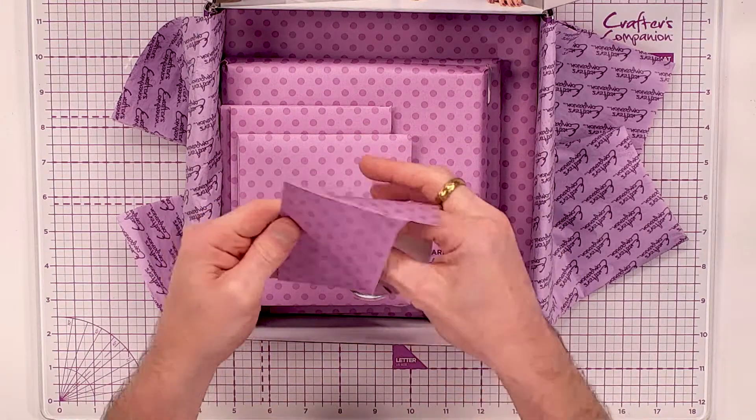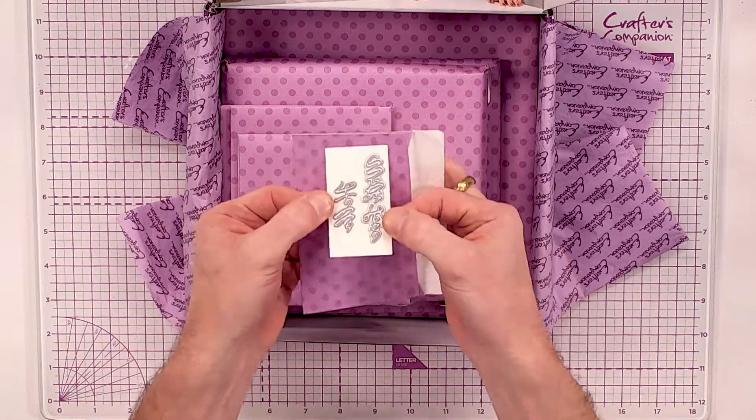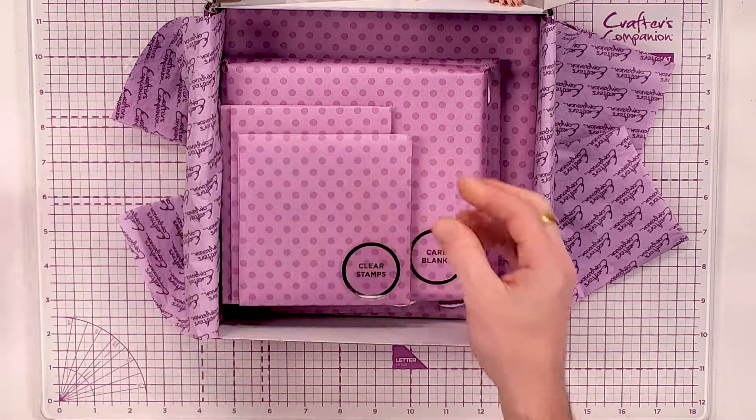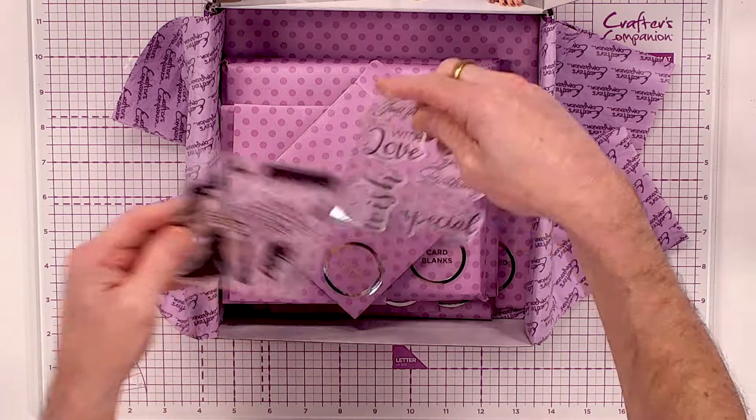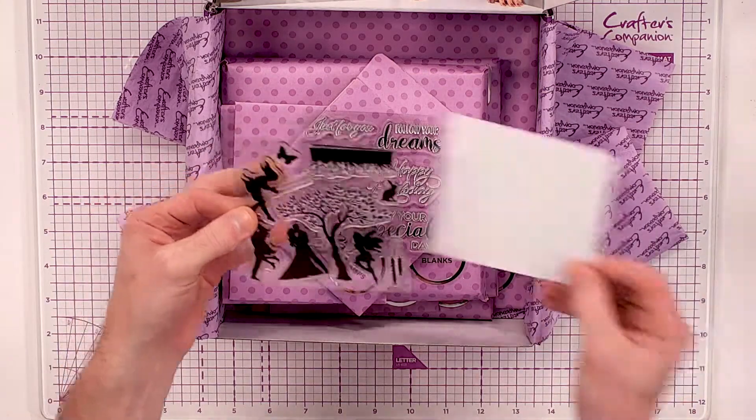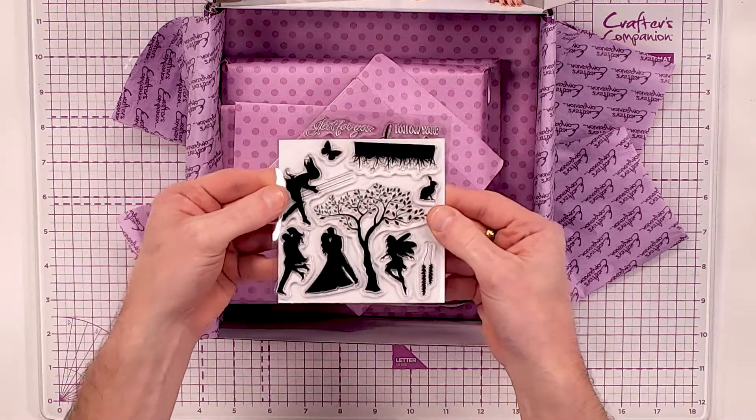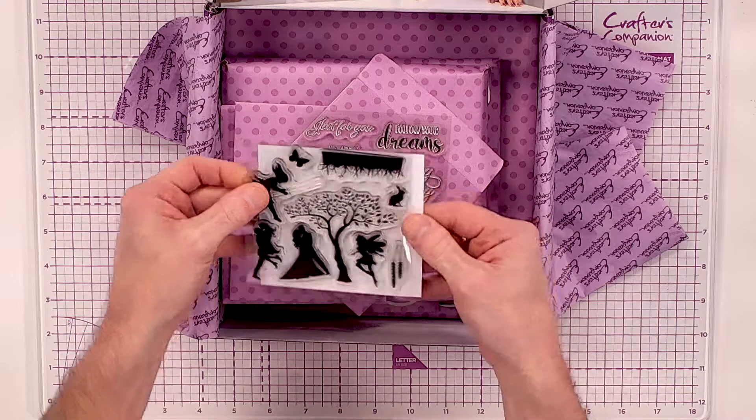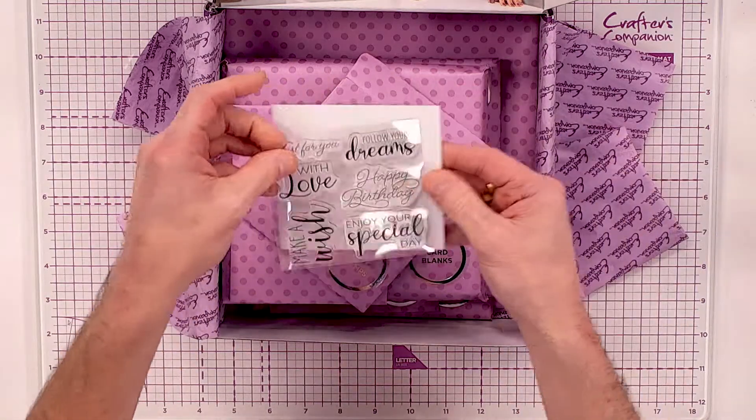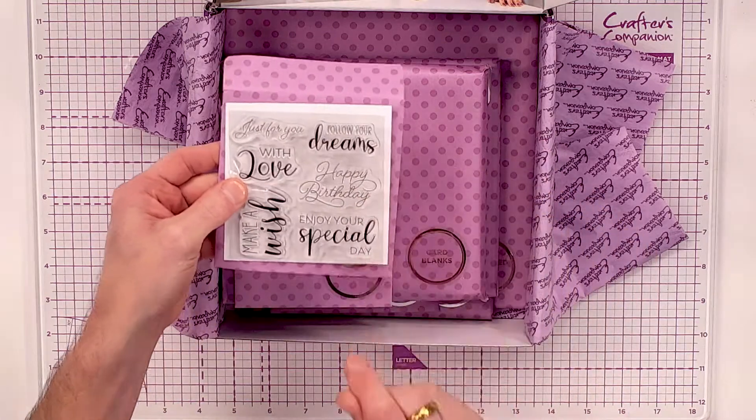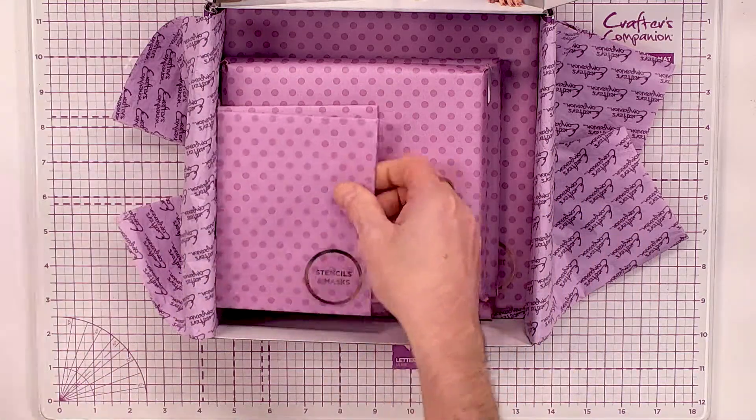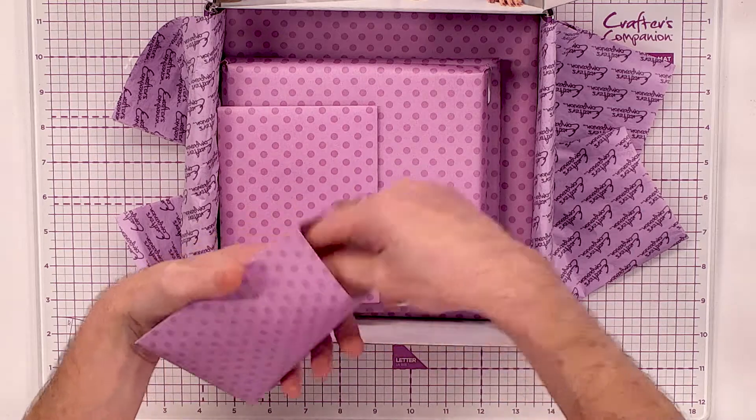Now when it comes to this box, this isn't really dedicated to dies, so what you are going to get is a couple of sentiment dies. But when it comes to this collection in the box, what you're going to get is these stamps. You're going to get a couple of sheets, so one of them is full of silhouettes and the other one is full of sentiments. When it comes to the stamps, you're getting 15 in total.